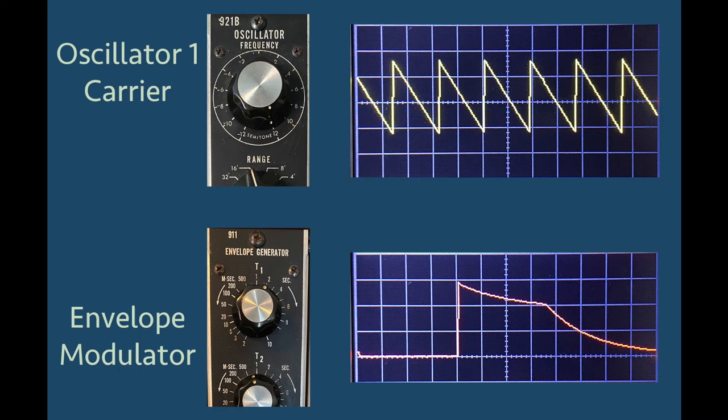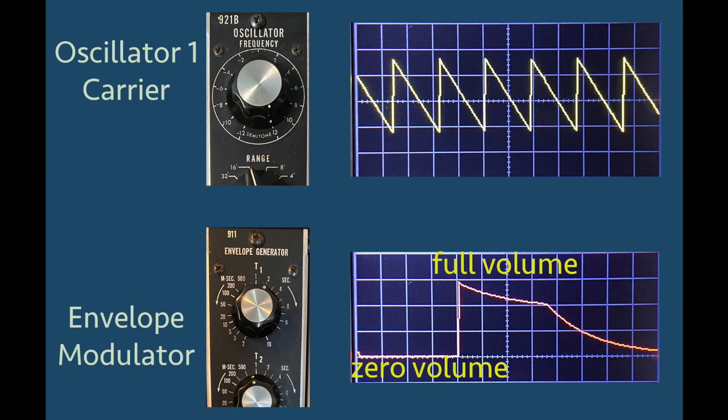What the envelope does is increase the output, or volume, on the particular VCA I am using, from zero volume to full volume. At full volume, we would hear the sawtooth wave the same as if I had just turned the volume knob on the amplifier all the way up.